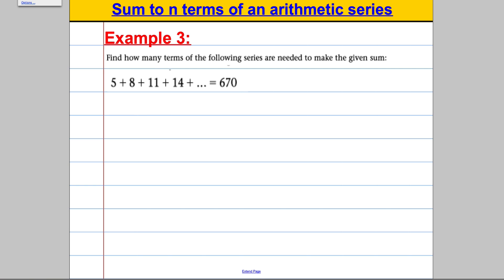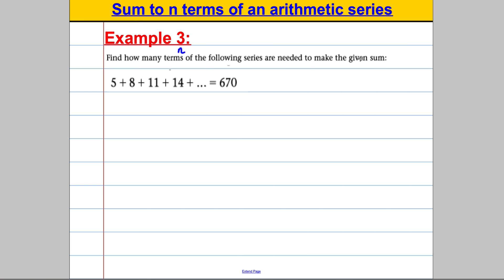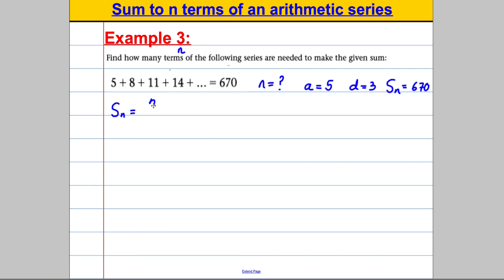The next example: we are asked to find how many terms of the series 5, 8, 11, 14, ... are needed for the sum to equal 670. They want me to work out N. What have they told me? A is 5, the common difference is going up in 3s so D is 3, and the sum to N terms is 670. Let's state the formula: S_N = N/2 × (2A + (N−1)×D). Since S_N is 670, we substitute in.